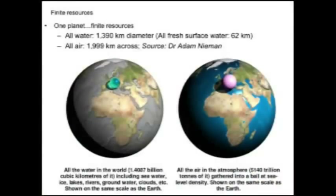Adam Neiman, a guy in the UK, put these two little things together. The one on the left is all the water on the planet — 1.4 billion cubic kilometres of it. That's a lot of water, including sea water, ice, lakes, rivers, groundwater, clouds, etc. It's shown on the same scale as the Earth. When you look at it, there's not a lot of water. There's definitely a limited amount of it.